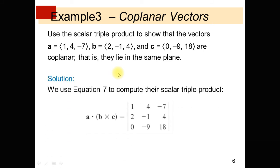Coplanar vectors are vectors which lie in the same plane. If the scalar triple product equals 0, then the vectors will be coplanar — they lie in the same plane. Using the scalar triple product A dot (B cross C) by determinant: first row contains components of A (1, 4, −7), second row components of B (2, −1, 4), and third row components of C (0, −9, 18). Expanding this determinant by the first row: